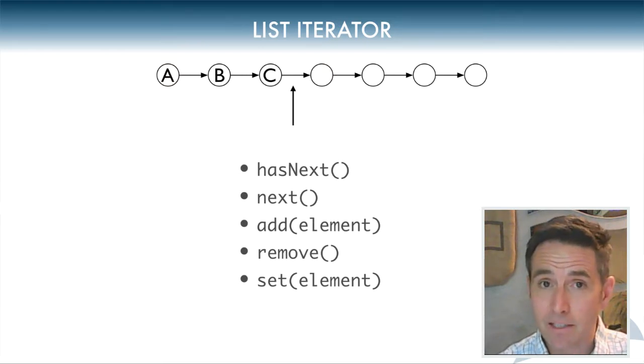If we would like to add something to this list, we can call add with the element that we would like to add. And in this case, the element would appear after C, but before the first blank element. If we'd like to remove an element after we have called next at least one time, we can call remove. And in this case, remove would remove the C node. Finally, if we'd like to change what the list contains, we can call set after we have called next at one point, so that we have at least passed over one element, in which case we can change the element, for example here, from C to D.